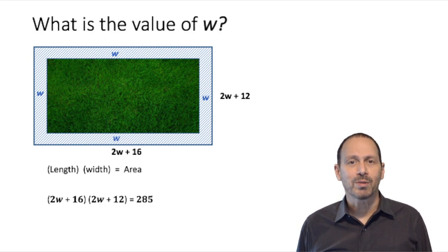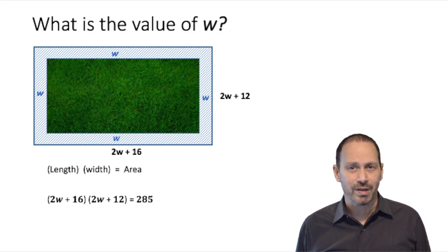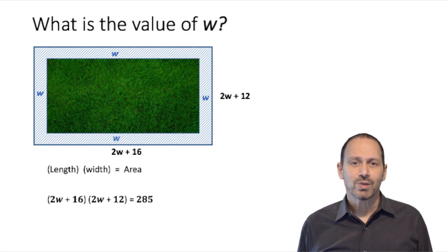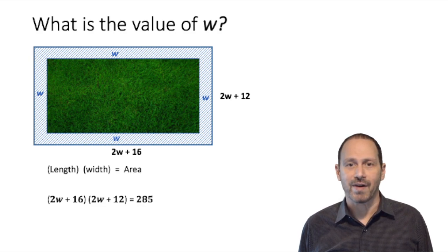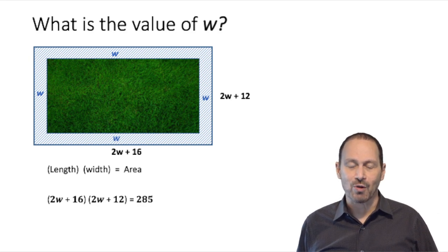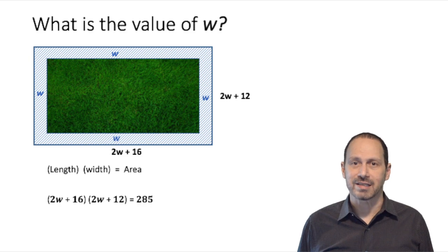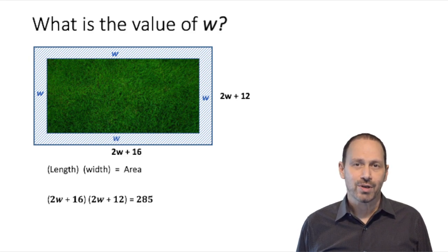As 2W plus 16, which is the length, multiplied by 2W plus 12, which is the width, equal to 285. We can establish this equation. It comes directly from the word problem. It comes from our analyzing the quantities of the word problem.